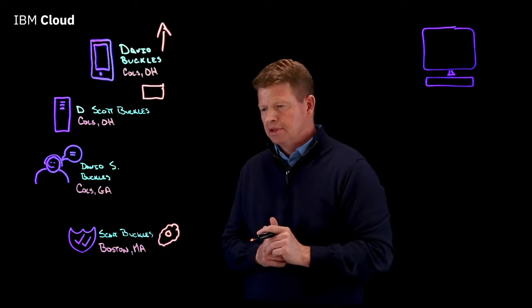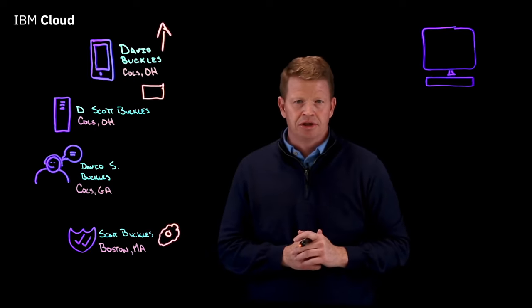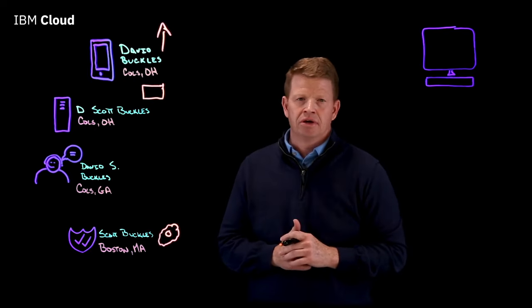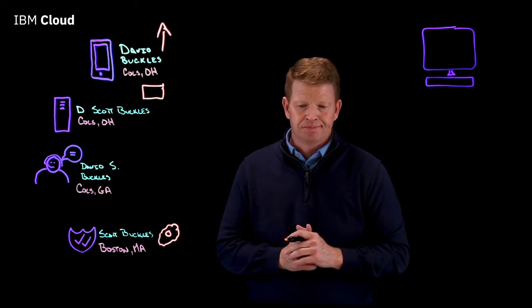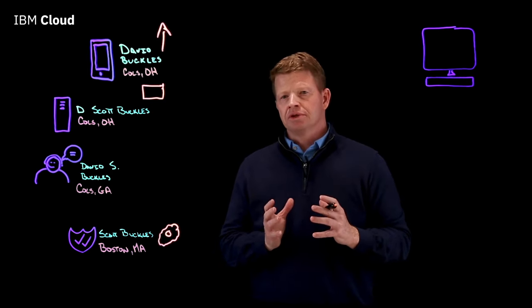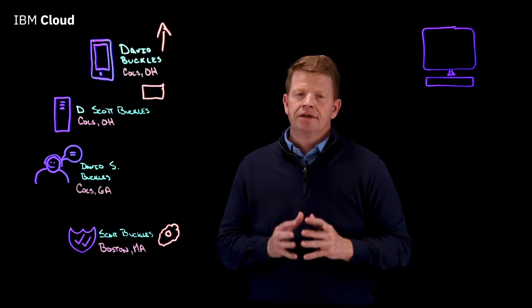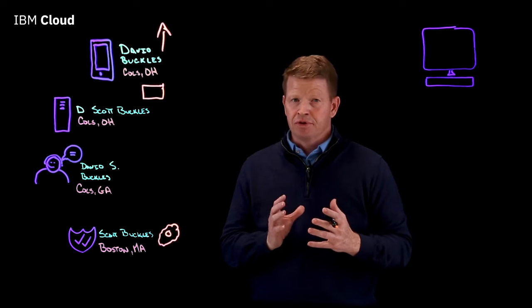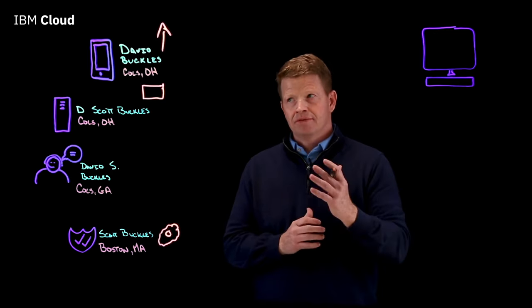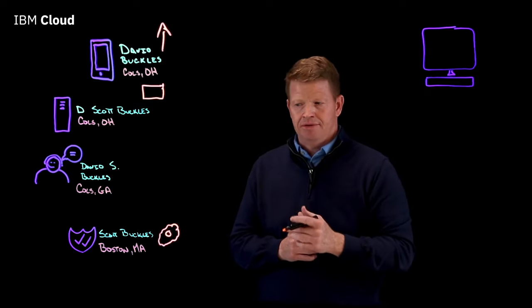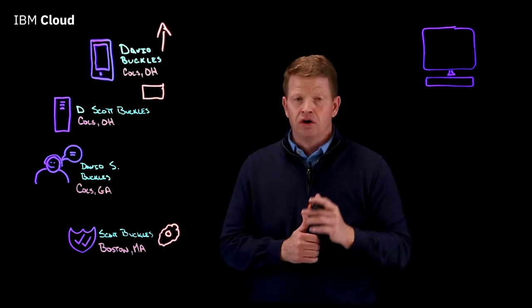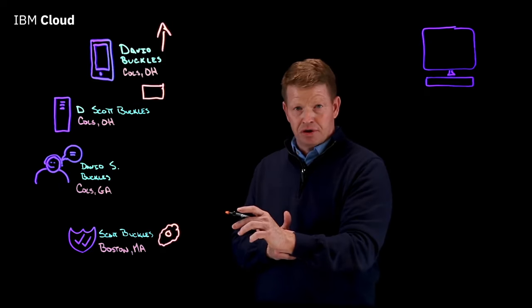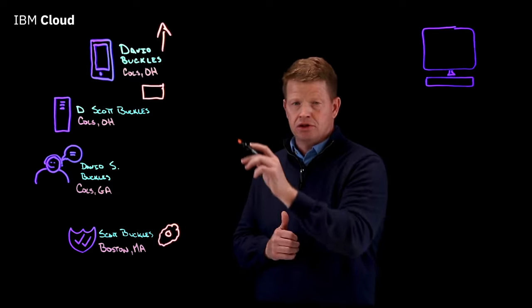Stay tuned. And finally, in the loyalty application, when I first signed up, I lived in Boston, Massachusetts, and I entered under just my common name of Scott Buckles. MDM solutions at their core are algorithms. They take different parameters and different rules to determine if a person is the same person with different data entry points, such as David Buckles, D. Scott, David S., or Scott Buckles. A good MDM solution will be able to determine whether I am the same person across all four of these, or maybe it's just three of the four.